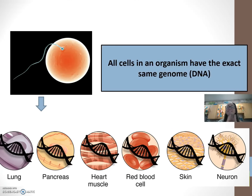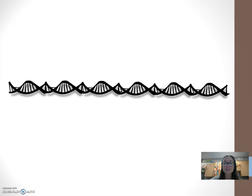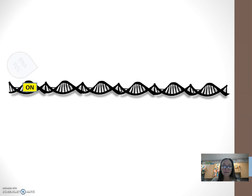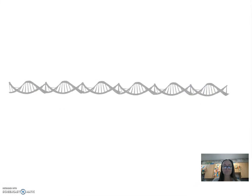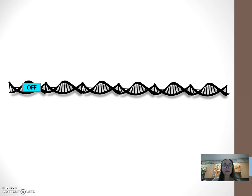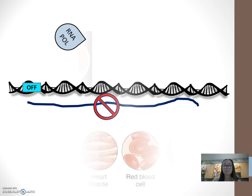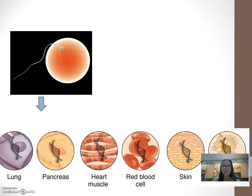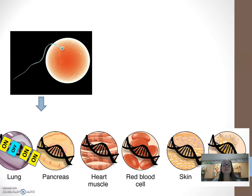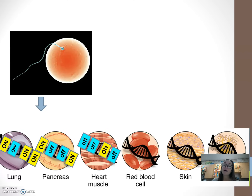All of the cells in our bodies have the exact same DNA, however they have different jobs, different proteins, different functions, different shapes, et cetera. When I talk about gene expression — when genes are turned on or expressed — that means RNA polymerase can transcribe and make RNA and ultimately a protein. If a gene is not expressed or turned off, then RNA polymerase is unable to attach and there's no protein, no RNA being made. How we get so many different kinds of cells with different functions is basically we turn on and turn off different combinations of genes.